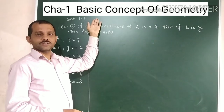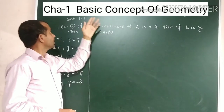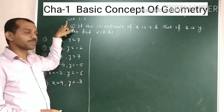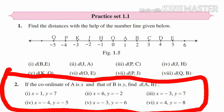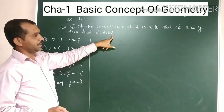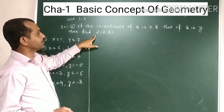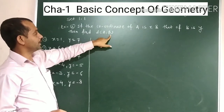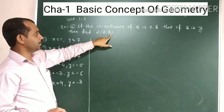The basic concept of geometry. Problem set 1.1, Example number 2. If the coordinate of A is x and that of B is y, then find the value of A and B — that is, find the distance between points A and B.